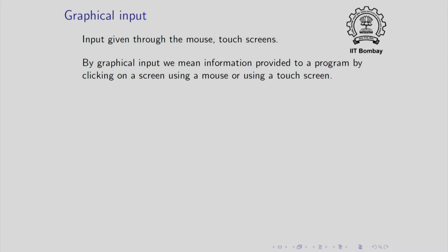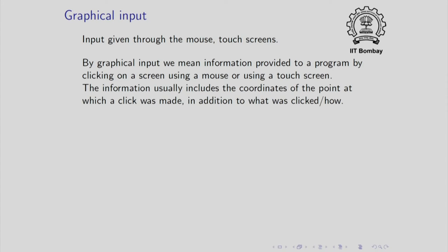Graphical input is input given through the mouse or touch screens — information provided to a program by clicking on a screen using a mouse or touch screen. We do not include keyboard input or reading files from disk. The graphical information usually includes the coordinates of the point at which a click was made, in addition to information about what was clicked — for example, whether the left, middle, or right mouse button was clicked, or whether the mouse was in motion.